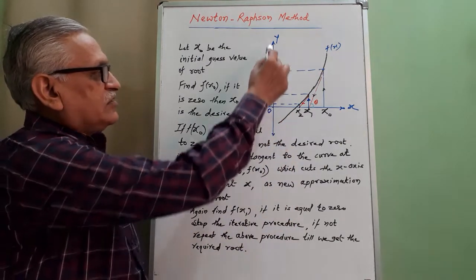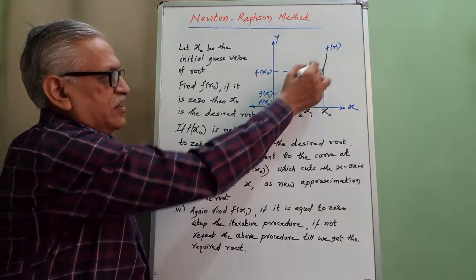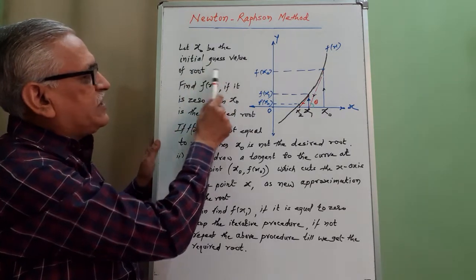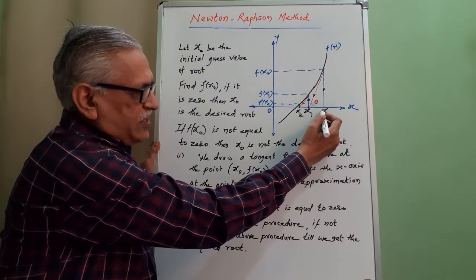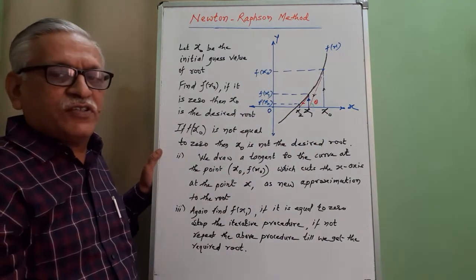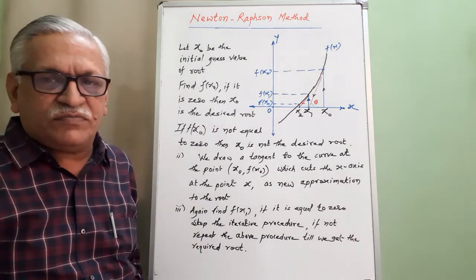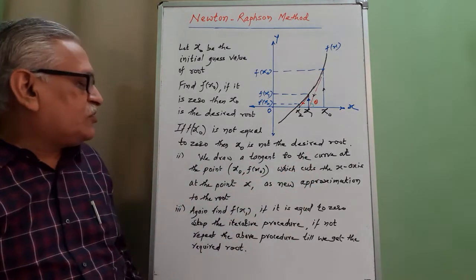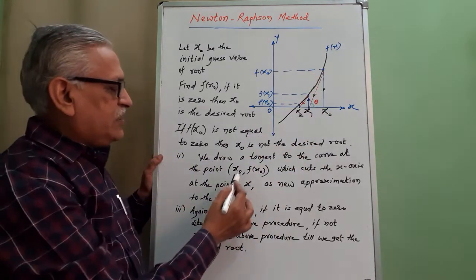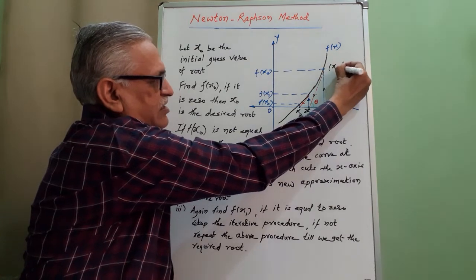In the Newton-Raphson method, we draw a figure with the x-axis, y-axis, and the curve y = f(x) for which we want the root. Let x₀ be the initial guess value — we start with x₀ as the first approximation. We then find the corresponding value of the function on the graph, which is f(x₀). The coordinates of that point are (x₀, f(x₀)).